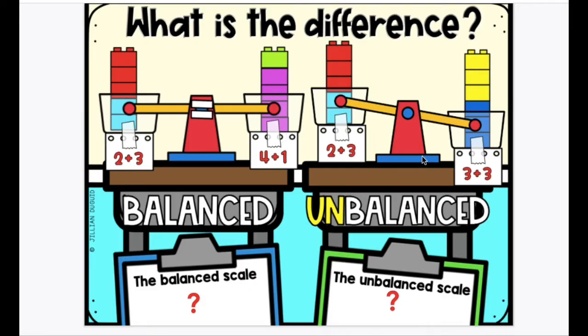What about the unbalanced scale? We have 2 plus 3 and 3 plus 3. 3 plus 3 has more cubes, so it's weighted down.